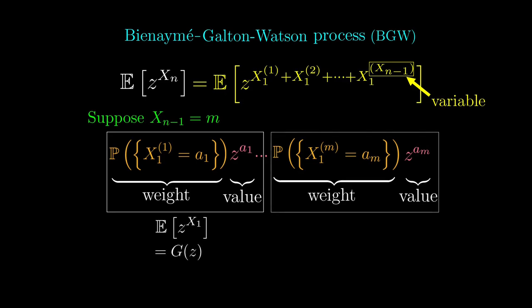Similarly, the same generating function appears for the other pairs. Since there are m pairs, on the condition that xn-1 is really m, the weighted average would be g of z to the m.